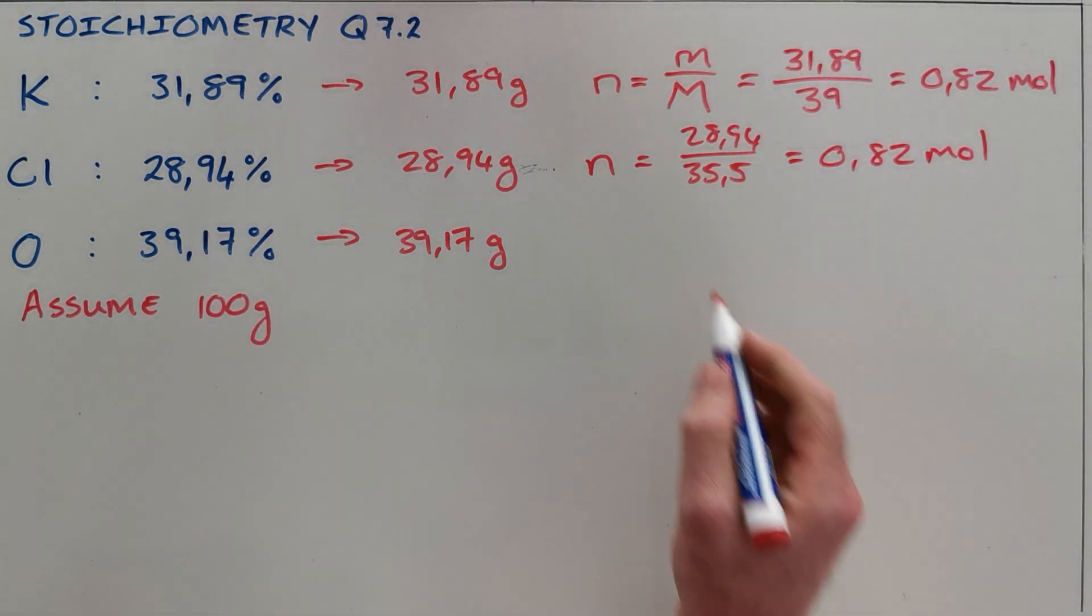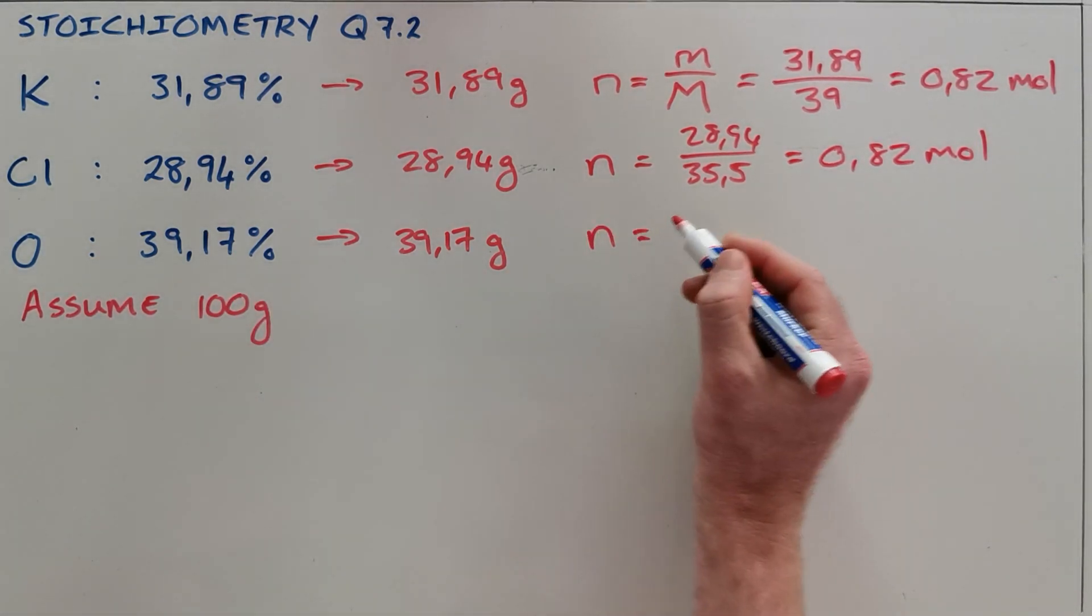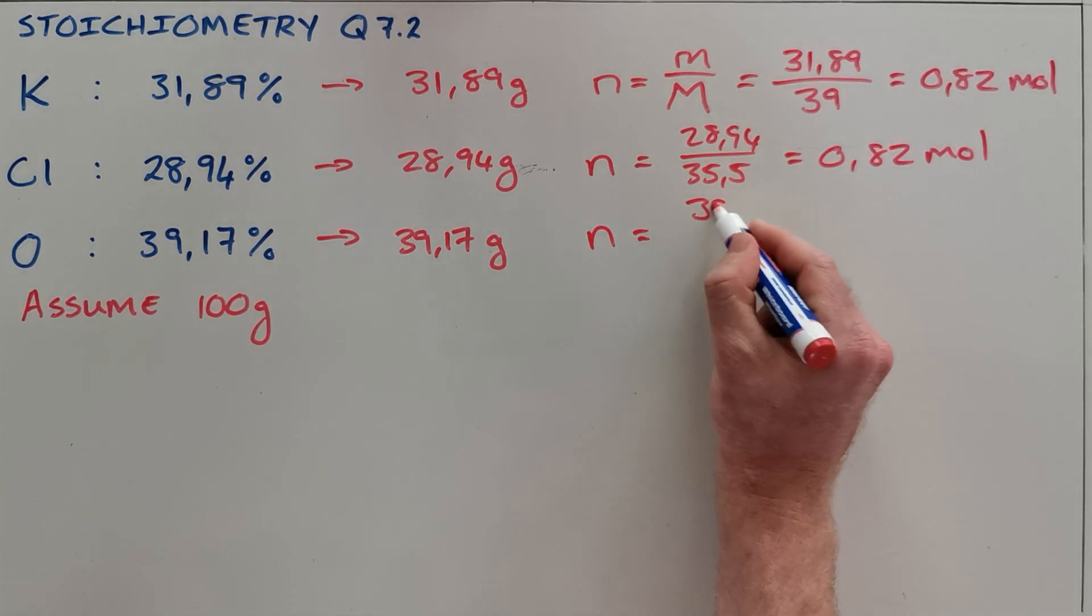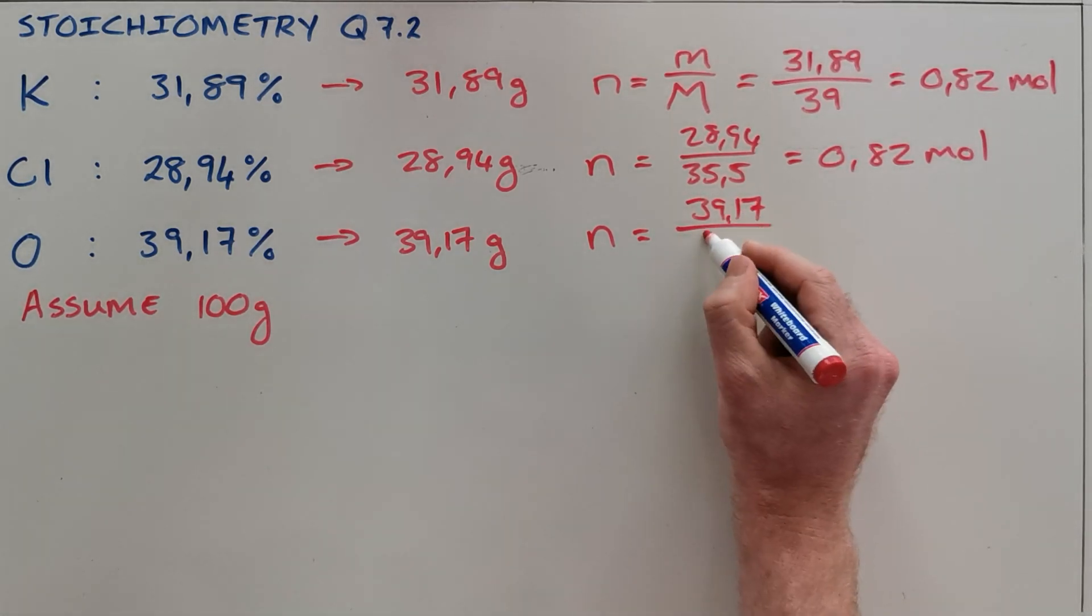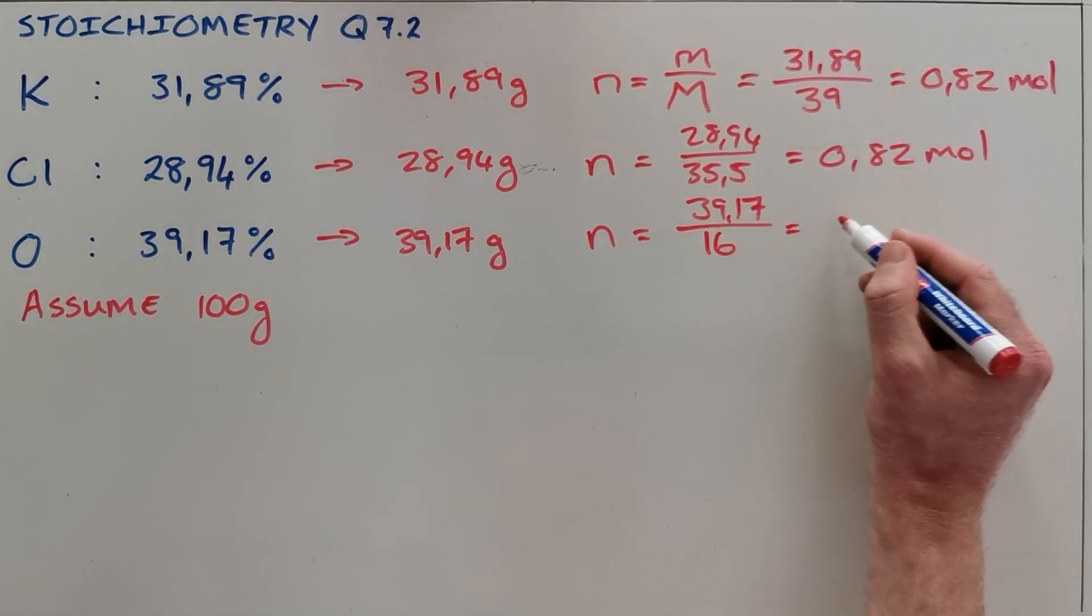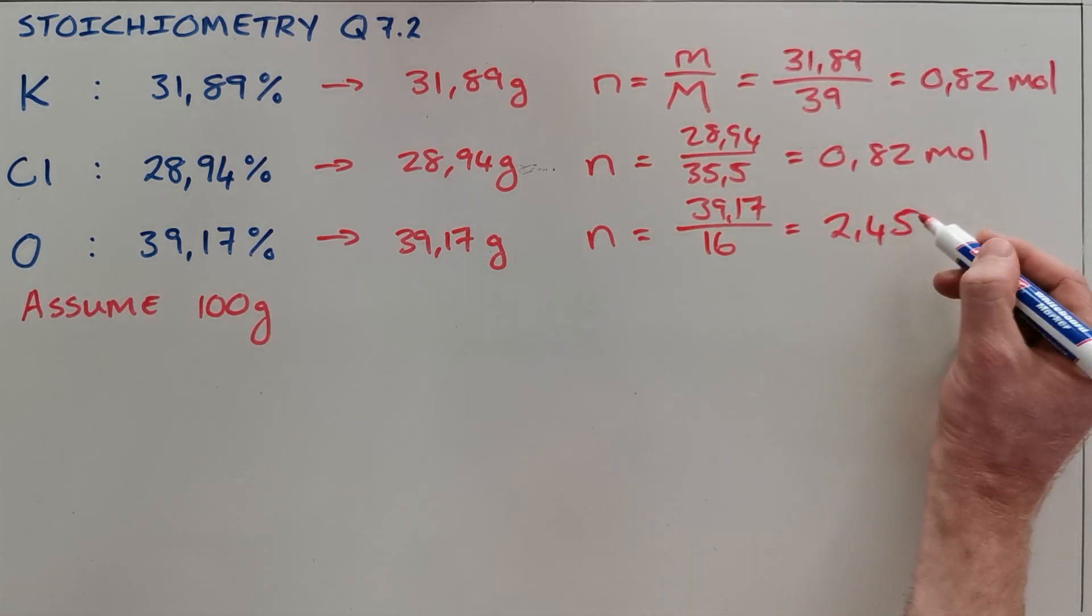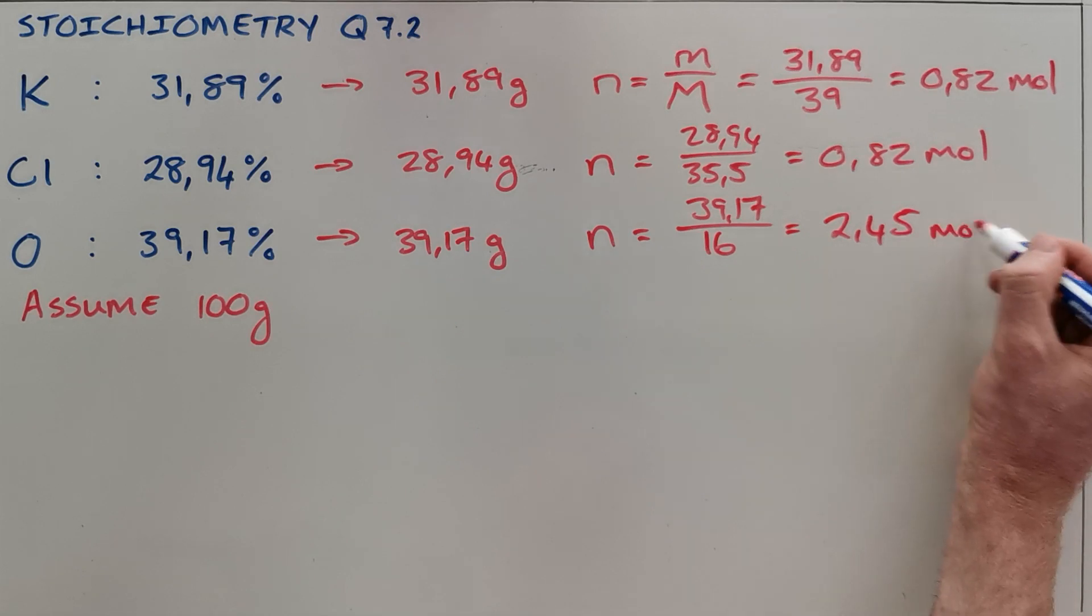Finally, same thing for oxygen: 39.17 grams of oxygen over the molar mass of 16 gives us 2.45 moles of oxygen present.